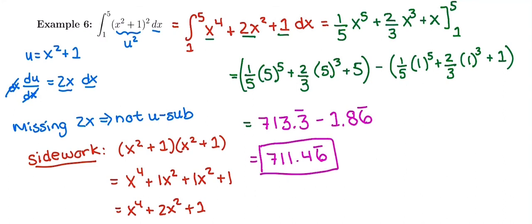So not a u-sub problem just means we have algebra to do before we can take the antiderivative. We put an evaluation bar instead of a plus c, and then we grab our calculator and plug in our upper bound minus our lower bound to get our final answer.